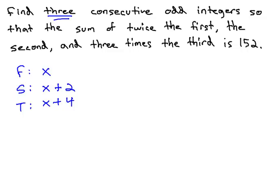All right, let's see what we're doing with these odd numbers. We want to take twice the first, which means we want to multiply the first one by 2. When we do that, we get 2x.